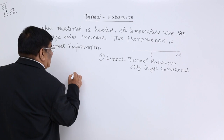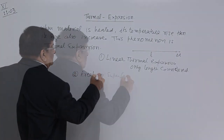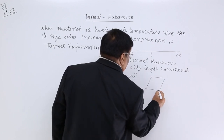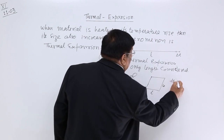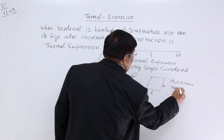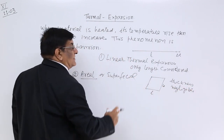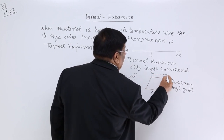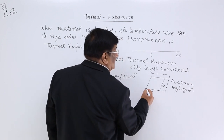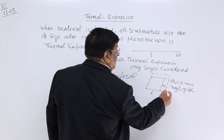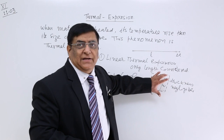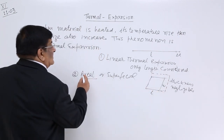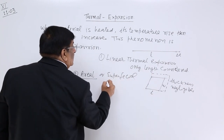Second is aerial or superficial expansion — regarding area. This is a plate which has got length and width, but thickness is negligible. So when this is heated up and temperature is given to it, we find the length has increased and the width has increased, and we get a new area. The total area has increased and this increase is significant. The increase in depth is neglected in this case. We call this aerial or superficial thermal expansion.